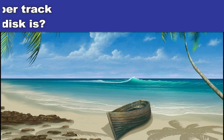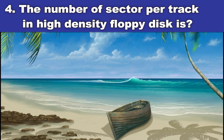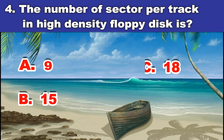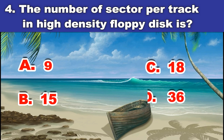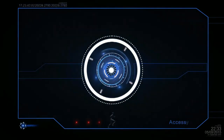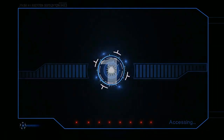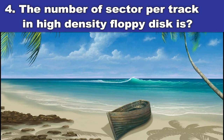Fourth question. The number of sectors per track in a high-density floppy disk is? A. 9. B. 15. C. 18. D. 36. And the answer is: 18.